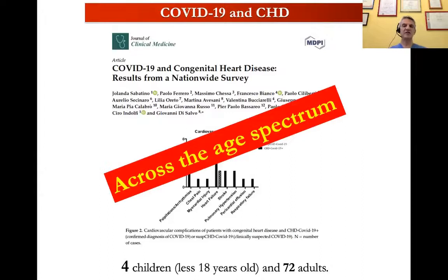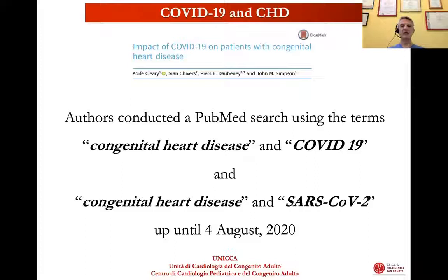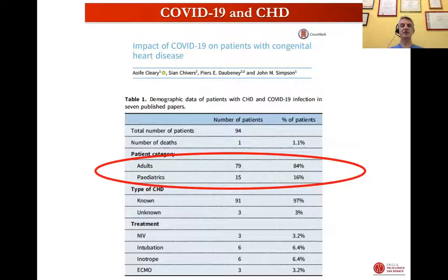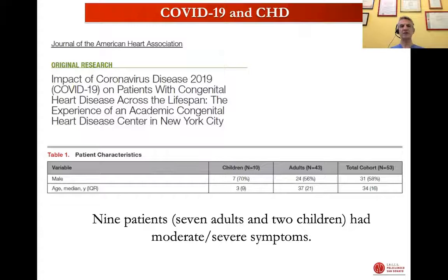This paper gave us the first insight with an important message: when discussing congenital patients, we should consider the full age spectrum of the condition. Another important paper searched PubMed using the terms 'congenital heart disease and COVID-19' or 'congenital heart disease and SARS-CoV-2.' These authors were able to collect 94 patients, most of them adults, with a death incidence of 1.2% — a very optimistic incidence lower than the general population.